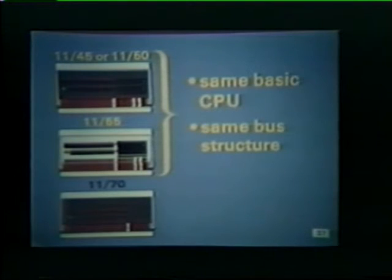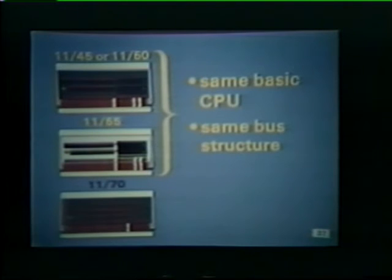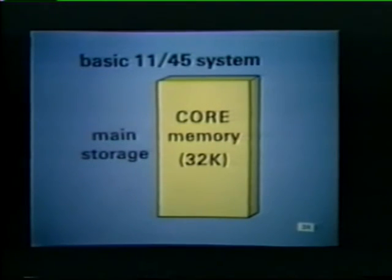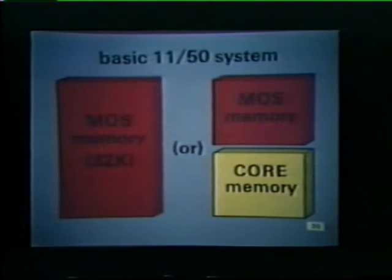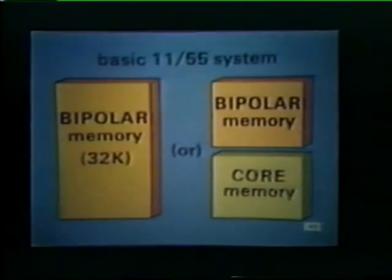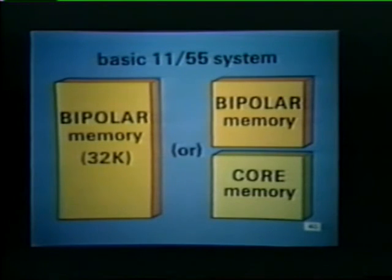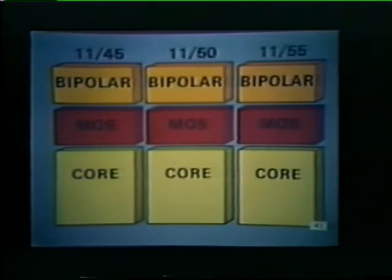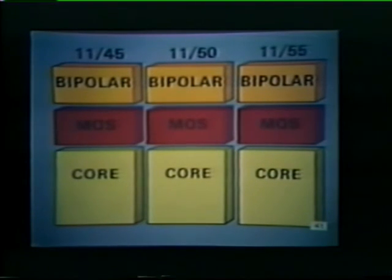The 1145, 1150, and 1155 systems incorporate the same basic CPU and bus structure. However, they differ in the types of main memory supplied in the basic system package. For example, main storage in the basic 1145 system consists of 32K words of core memory. On the other hand, 1150 systems use faster MOS memory, or a mixture of MOS and core memory. 1155 systems are supplied with 32K of bipolar memory, or a mixture of bipolar memory and core memory. Larger 1145 and 1150 systems can be expanded using combinations of bipolar, MOS, and core memory so that these PDP-11 systems look alike in terms of main storage.